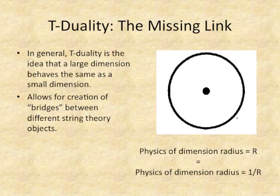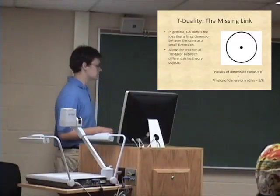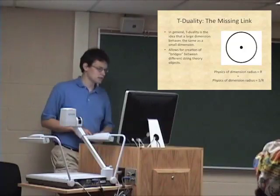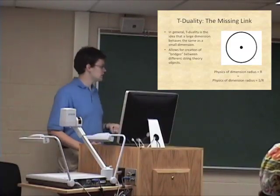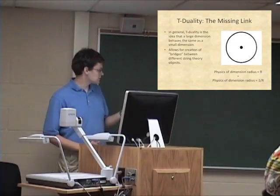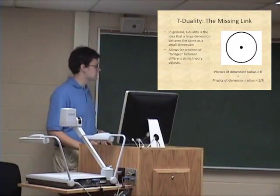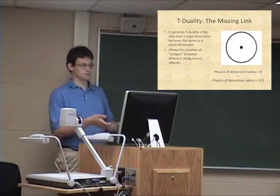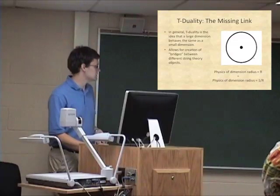Here's T-duality. Those extra dimensions could be both large or small. T-duality in general is the idea that a large dimension should behave the same as a small dimension. The physics of a dimension with a radius of R — represented by the large circle — should be equal to the physics of a dimension with a radius 1/R — represented by the small circle. T-duality allows for the creation of bridges, linking different string theory objects to make them T-dual to each other.